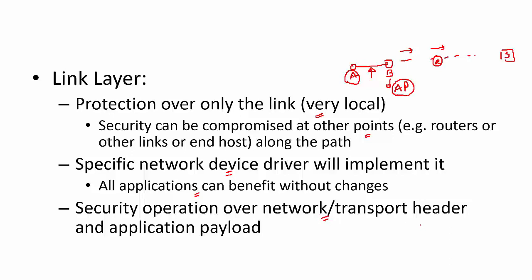Link layer security means the security operation will be over network and transport headers as well as the application payload. For example, if you are looking at web traffic, there is a GET request; to this you add a TCP header, then an IP header, and this entire thing may be encrypted or have integrity checks applied. With this background, let's look at individual protocols at different layers of the protocol stack.